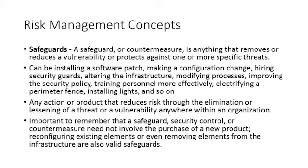Safeguards could include installing a software patch, making a configuration change on a router, firewall, or system, hiring security guards to protect the physical perimeter, altering the infrastructure, changing vendors, modifying internal processes, improving our security policy, or training personnel to recognize social engineering, phishing attempts, or tailgating. We could also electrify a perimeter fence or install lights. All of these are examples of safeguards — things we put in place to reduce our vulnerabilities.